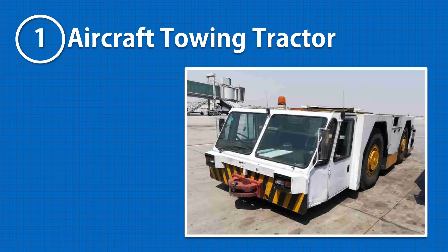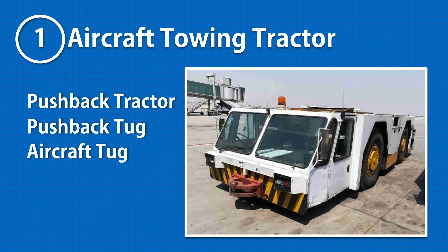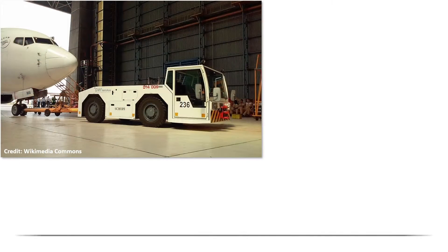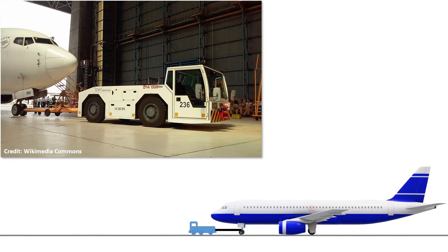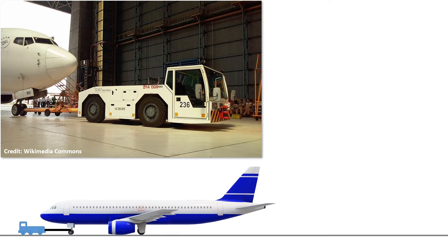The first is the aircraft towing tractor, also known as pushback tractor, pushback tug, and aircraft tug. It is a heavy-duty vehicle used for towing an aircraft when the aircraft's engines are off.